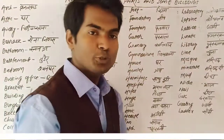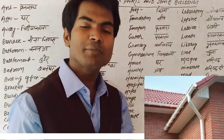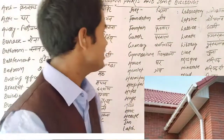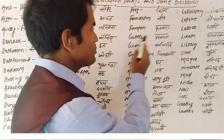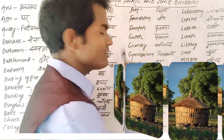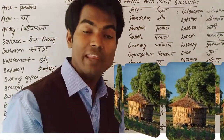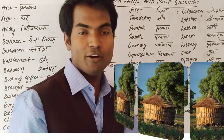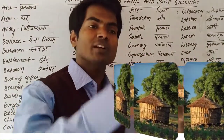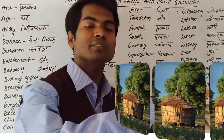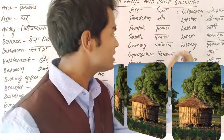Gutter — gutter ka matlab hota hai 'parnala.' Granary — granary ka matlab hota 'khalihaan.' Yeh 'gran' se bana hai, gran matlab 'anaaj' hota hai. Anaaj ka jitna bhi kaam hota hai, khalihaan mein hi hota hai. Isliye 'gran' se granary bana, jisko bolte hain khalihaan.